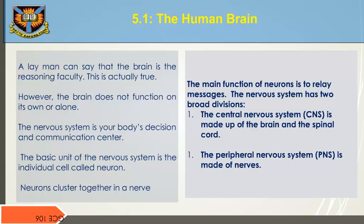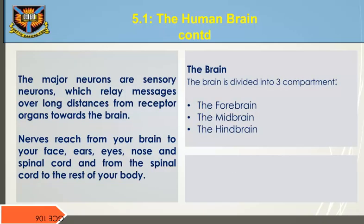2. The peripheral nervous system (PNS), which is made up of nerves. The major neurons are sensory neurons, which relay messages over long distances from receptor organs towards the brain. Nerves reach from your brain to your face, ears, eyes, nose, and spinal cord, and from the spinal cord to the rest of the body.